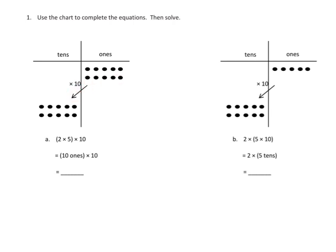We begin right here with an array, a 2 by 5 array. So we have 2 rows of 5. And then when you multiply that by 10, we've learned that if you have 10 copies of something, you can move it over to the next column.